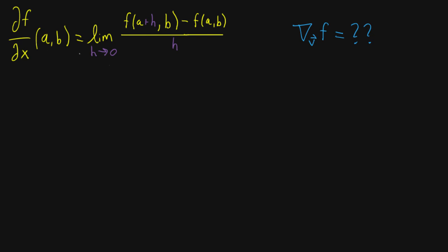I have written here the formal definition for the partial derivative of a two-variable function with respect to x, and what I want to do is build up to the formal definition of the directional derivative of that same function in the direction of some vector v. This will be some vector in the input space. And I have another video on the formal definition of the partial derivative if you want to check that out.